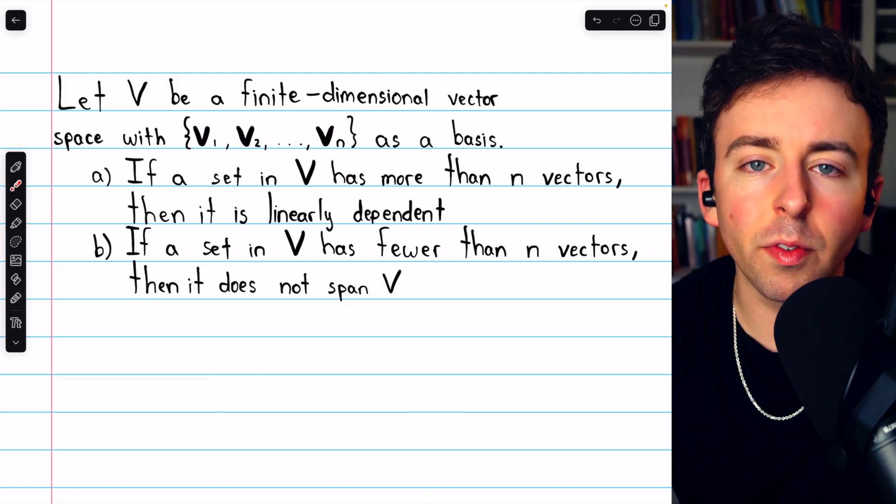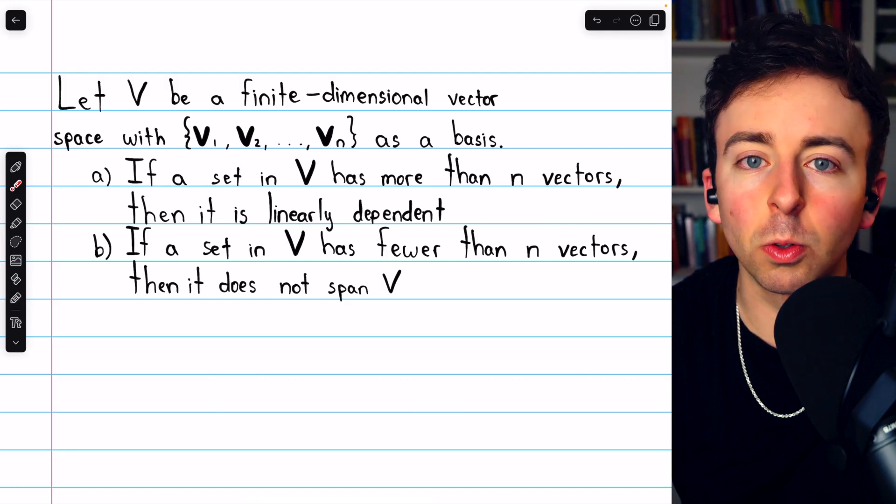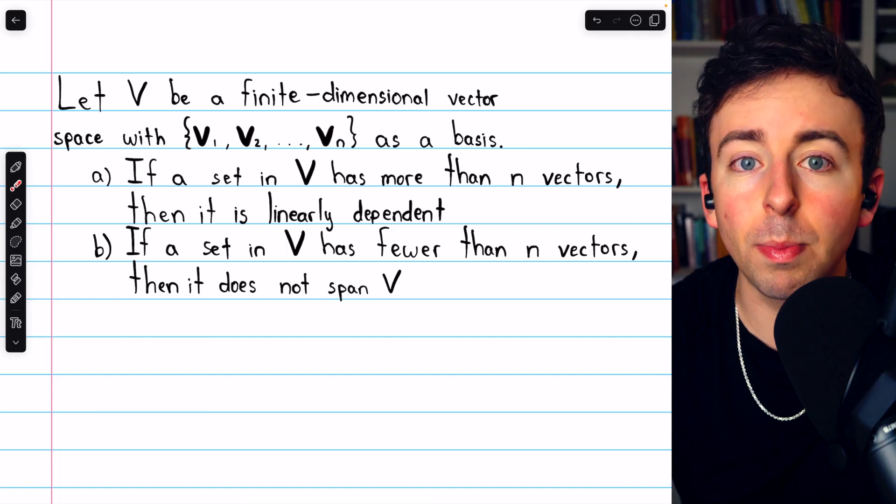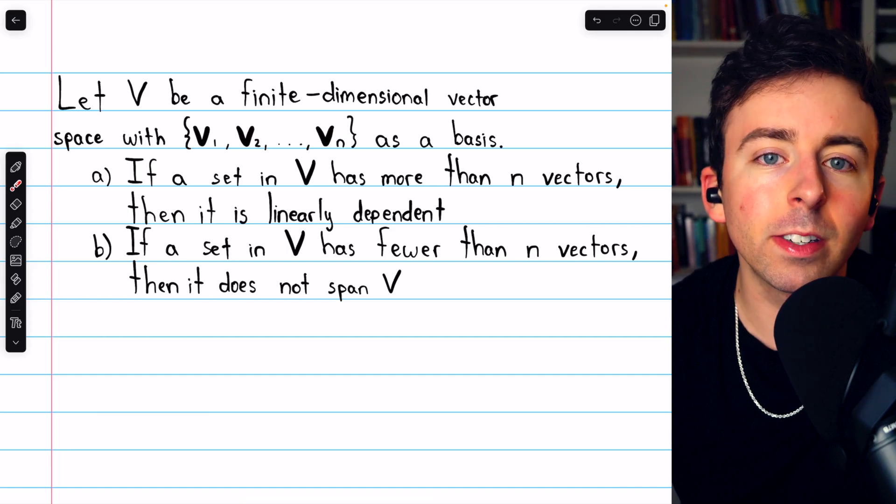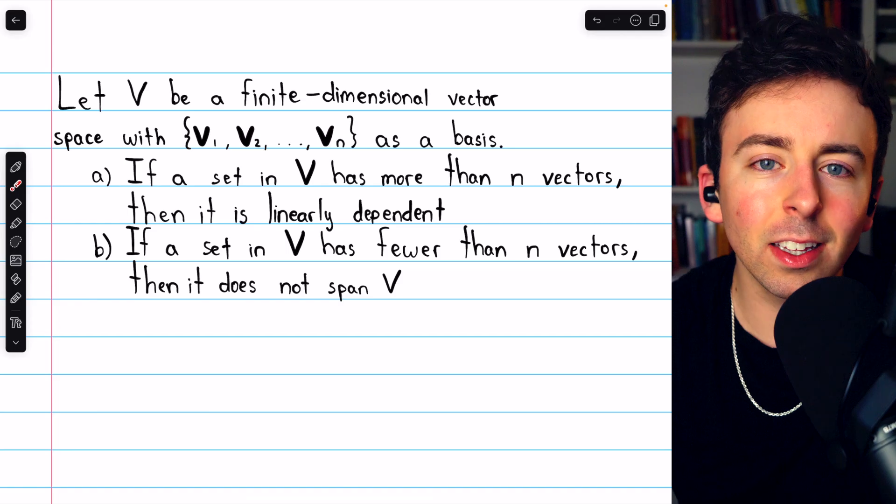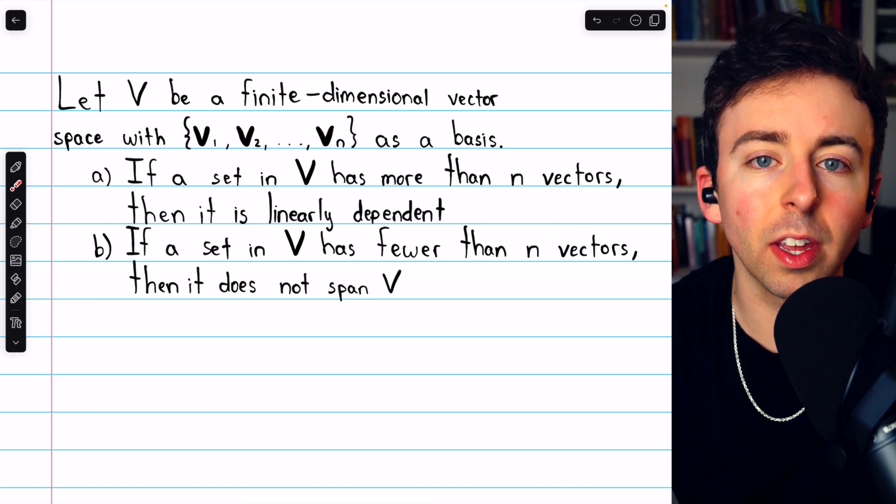Now that we know what a basis of a vector space is, a linearly independent set of vectors that spans the space, we're prepared to define the dimension of a vector space and look at some familiar examples of dimension.